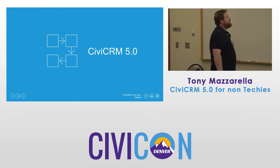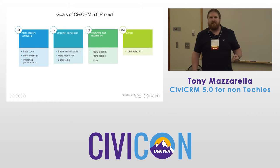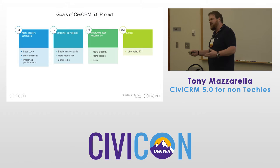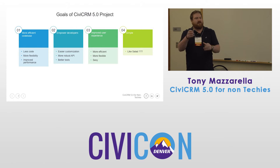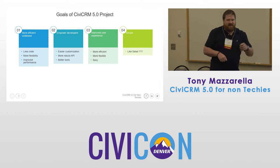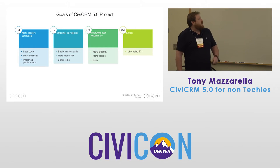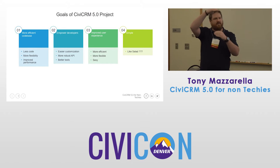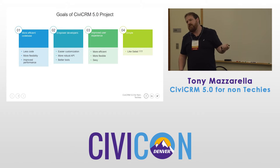CiviCRM 5.0 — the goals of the project. We want to make a more effective code base. CiviCRM is 10 years old now and it's grown substantially. Whenever you keep adding things, it gets big. Technology has changed and we have a very large code base — hundreds of thousands of lines of code. We want to reduce the amount of code, taking functions that are seven lines and making them one line. That will allow us to be more flexible and increase the performance of the software.